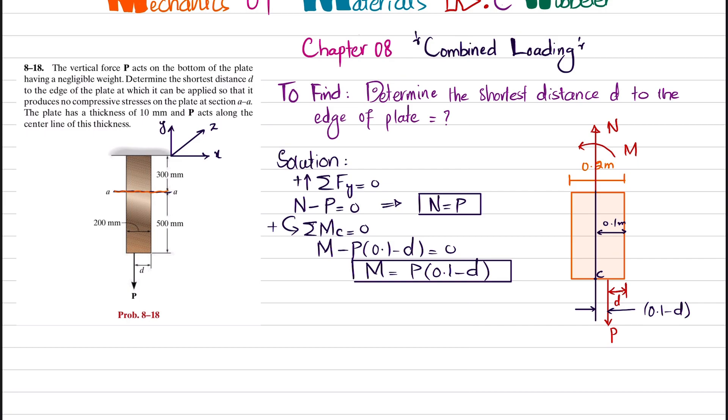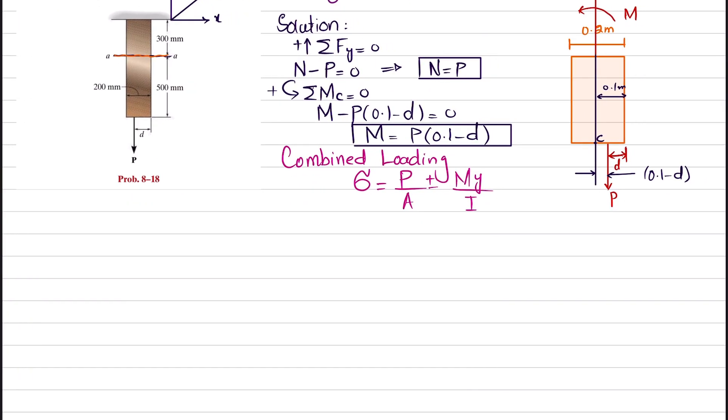This is a problem of combined loading in which there is an axial force producing axial stress N/A, and due to this moment there will be bending stress sigma M equals MY/I. The formula is normal stress equals P/A plus minus MY/I. For compressive stress, sigma equals P/A minus MY/I.